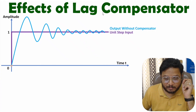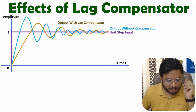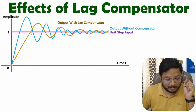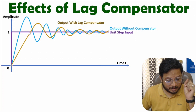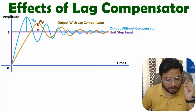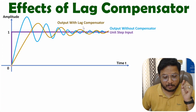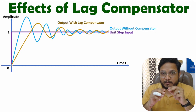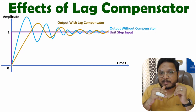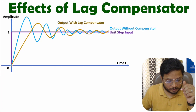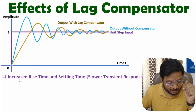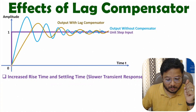If we add a Lag Compensator with the system, then you will be observing the output is happening somewhat like this. If you carefully observe this output response with Lag Compensator, clearly we have a higher rise time from 0 to 100%. You can observe that with Lag Compensator, rise time is increasing. And if you observe one more thing, we have maximum peak overshoot — that maximum peak overshoot is decreasing because of the Lag Compensator. So with Lag Compensator, there will be higher rise time and lower maximum peak overshoot. You can observe that settling time is also increasing because of the Lag Compensator.